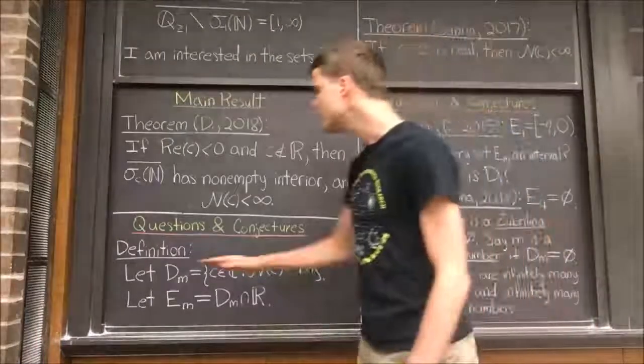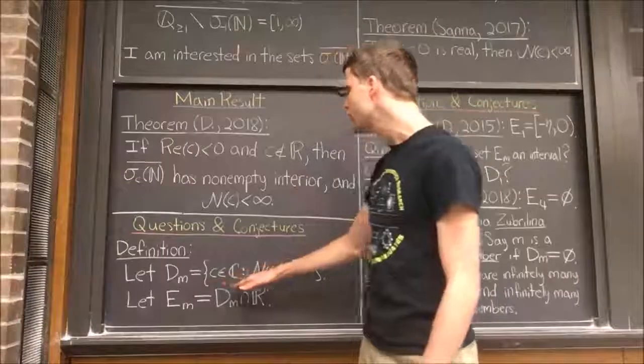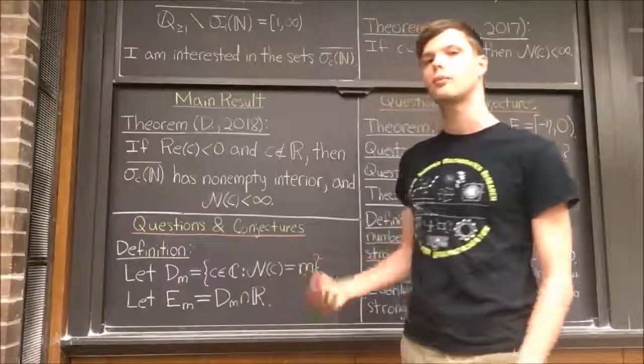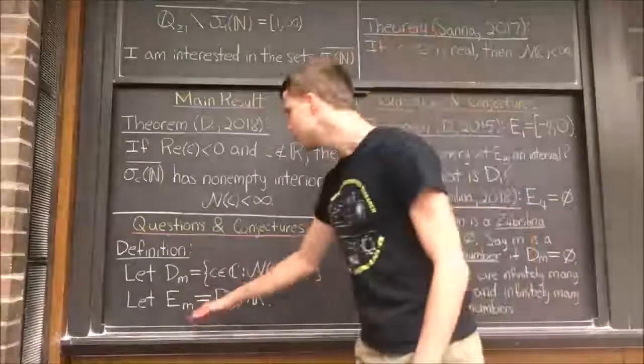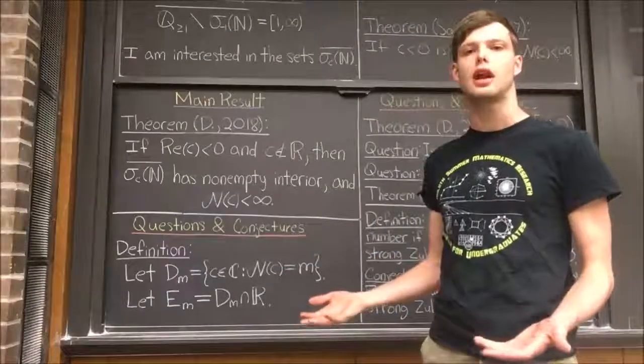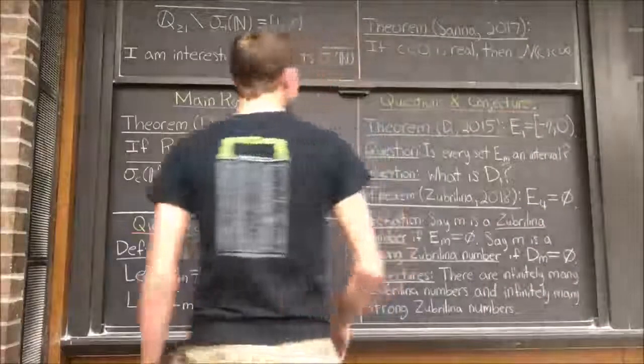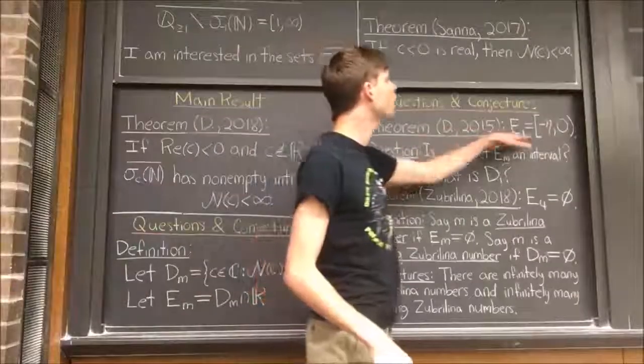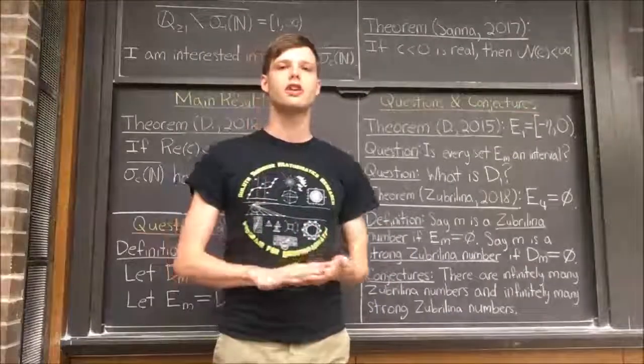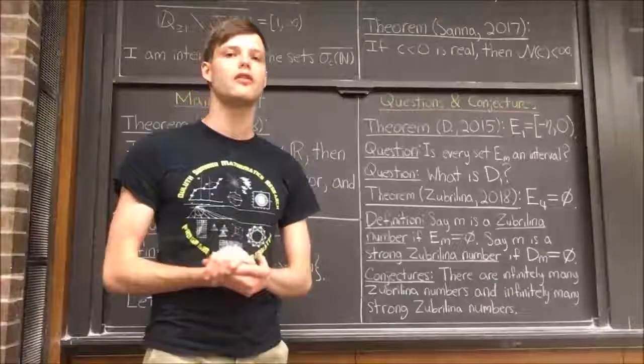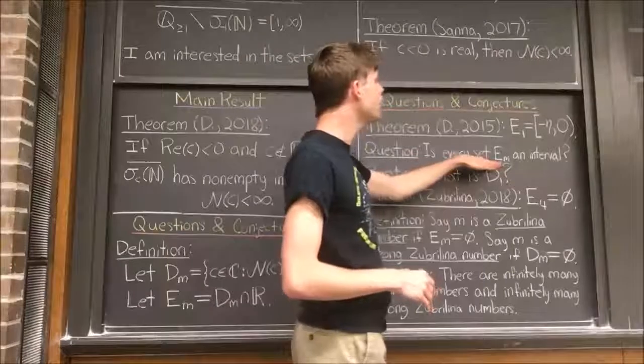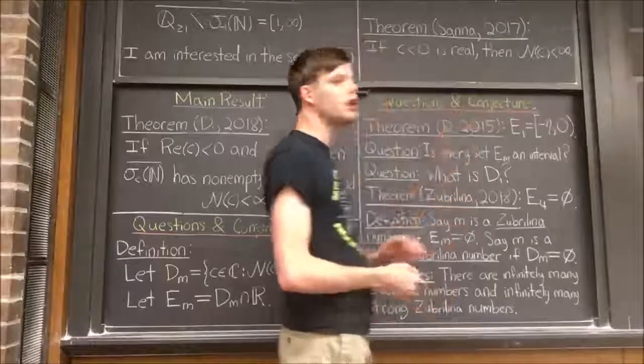I want to define D_m to be the set of complex numbers c such that the closure of the range of σ_c has exactly m connected components. In a previous paper, I showed that the set E_1 is the interval from -η to 0, where η is an explicit constant defined as the root of a certain function involving the Riemann zeta function. A natural question to ask is if all of these sets E_m are actually intervals, just like the set E_1 is an interval.